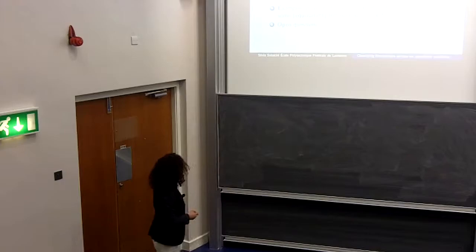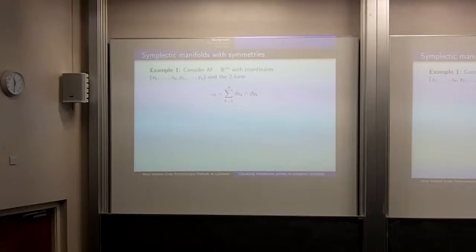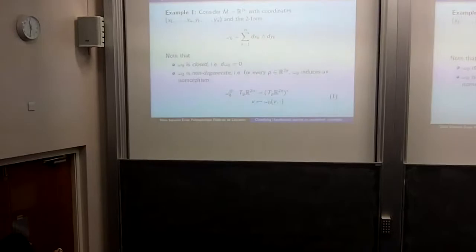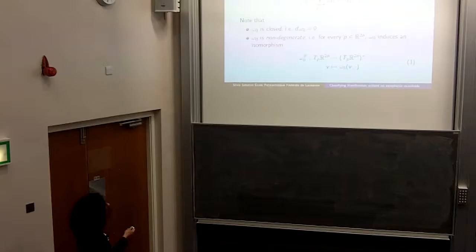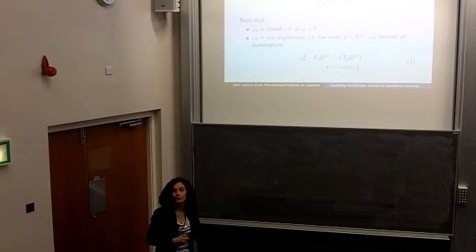Let me tell you what a symplectic manifold is. Consider ℝ²ⁿ with standard coordinates x₁,...,xₙ, y₁,...,yₙ and the standard form ω₀. This form is closed — dω₀ = 0 — and non-degenerate: for every point p in ℝ²ⁿ, ω₀ induces an isomorphism between the tangent space at p and its dual, sending vector v to the one-form ω₀(v, ·). This is a very easy example, but it's the one to keep in mind.